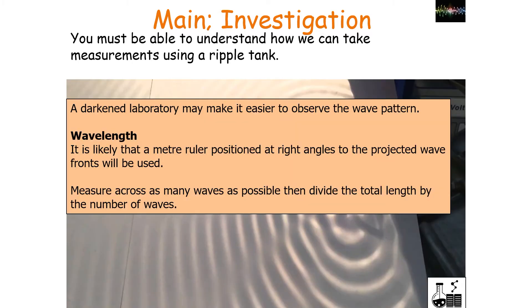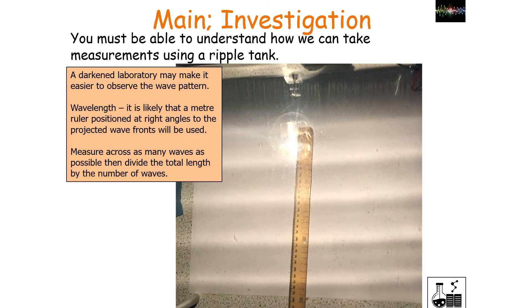A darkened lab makes it easy to observe these wave patterns. You can then use a meter ruler positioned at right angles to the projected wave fronts to measure the wavelength. In the darkened lab, place your meter ruler perpendicular to the ripples or wave fronts as shown on the card underneath the ripple tank, then measure across as many waves as possible and divide the total length by the number of waves.